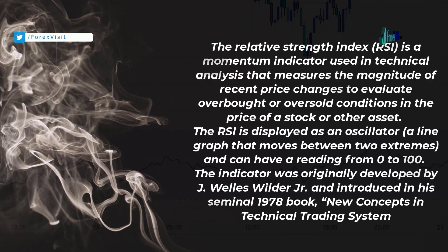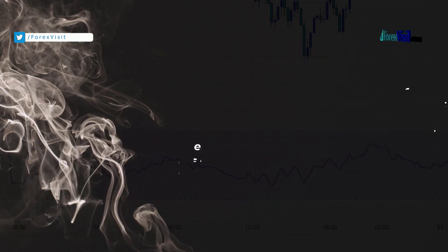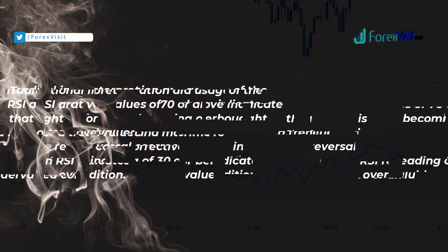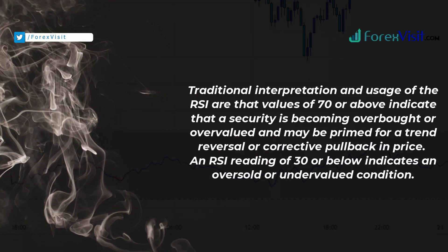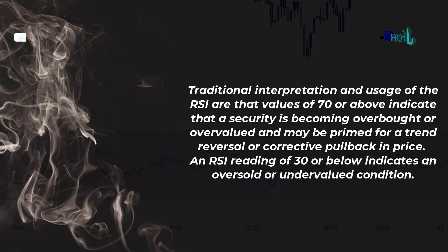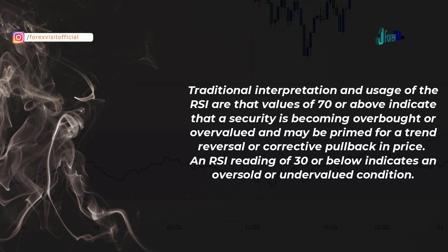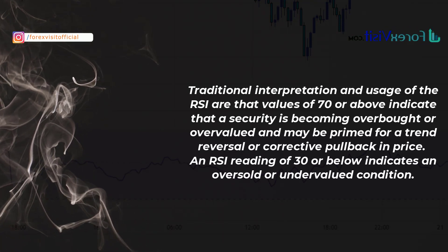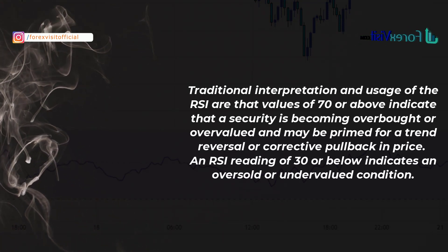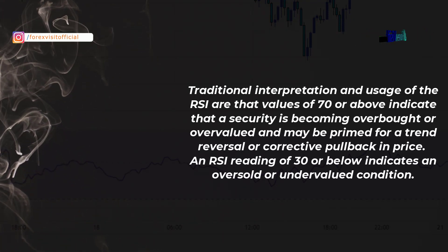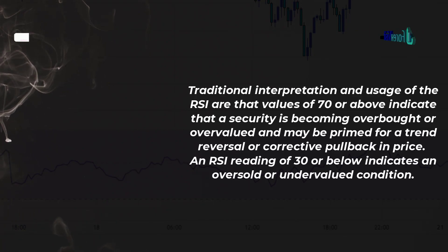Traditional interpretation and usage of the RSI are that values of 70 or above indicate that a security is becoming overbought or overvalued and may be primed for a trend reversal or corrective pullback in price. An RSI reading of 30 or below indicates an oversold or undervalued condition.